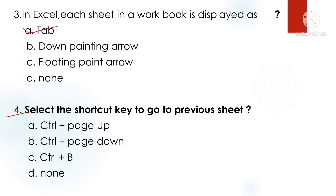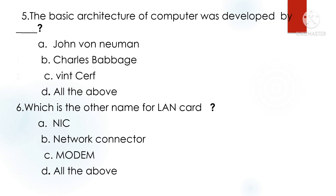Question 4: Select the shortcut key to go to the previous sheet. Option A: Ctrl+Page Down goes to the next page. Ctrl+Page Up goes to the previous sheet. Note: Ctrl+B is bold.